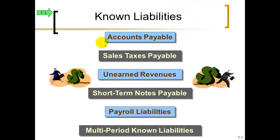Some names for liability accounts: we've seen accounts payable before, probably the most common. Most liabilities end with the word payable. There's also unearned revenue — when you receive money in advance and haven't done the work yet, you haven't earned it, so it's a liability. In chapter 9 we'll learn sales taxes payable and liabilities related to payroll. We've seen notes receivable before; now we're on the borrower's side with notes payable.